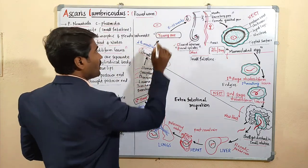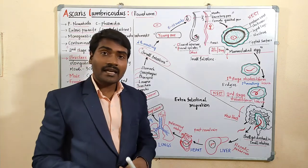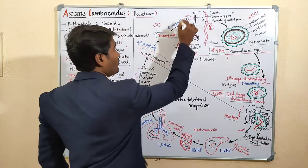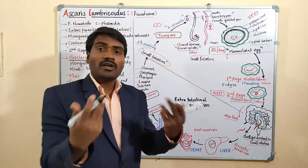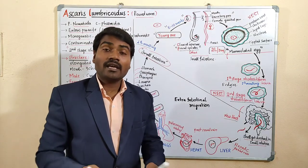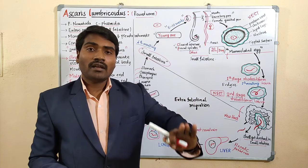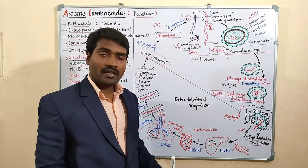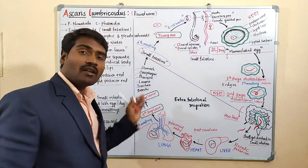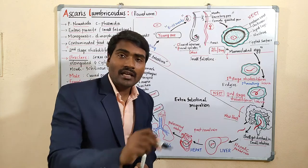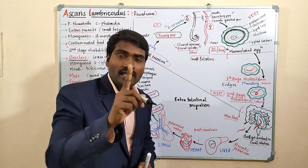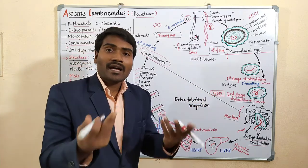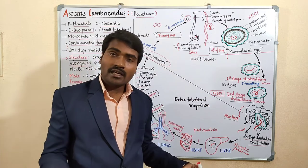After the fourth molting, it becomes a young adult. Within 8 to 10 weeks, the young adults attain sexual maturity and develop into adults. They can then reproduce. Copulation again takes place in the small intestine, larvae are produced, and the same cycle continues. The entire life cycle is completed in only one host, hence it is a monogenetic parasite and an enteric parasite.